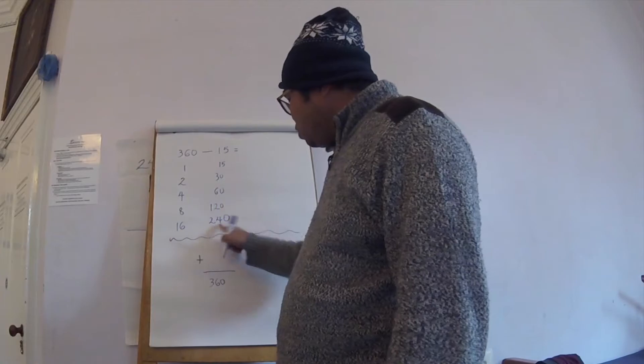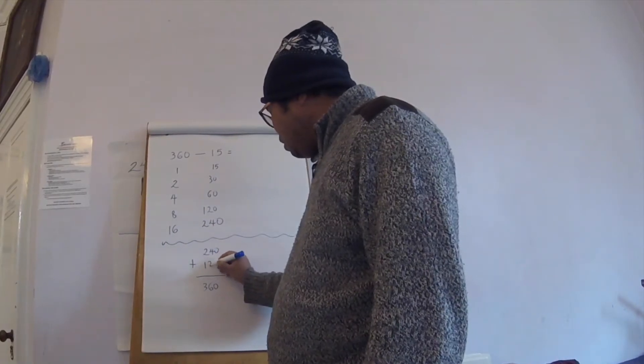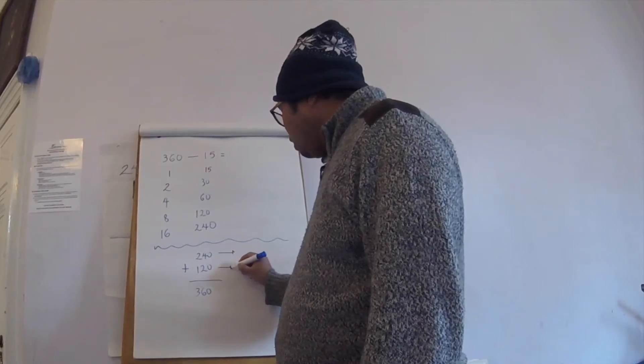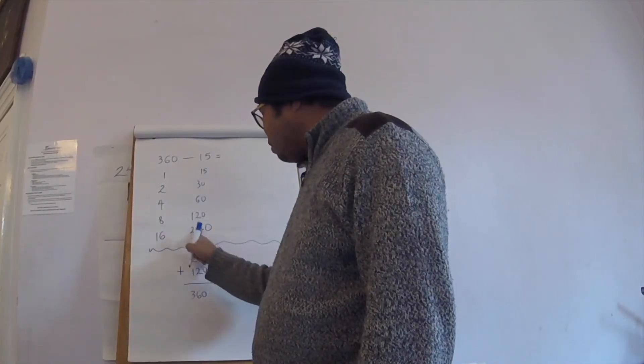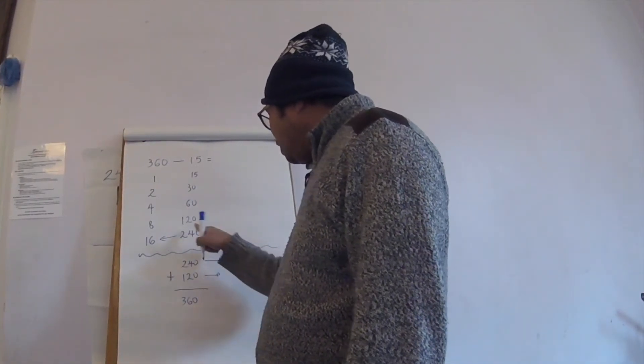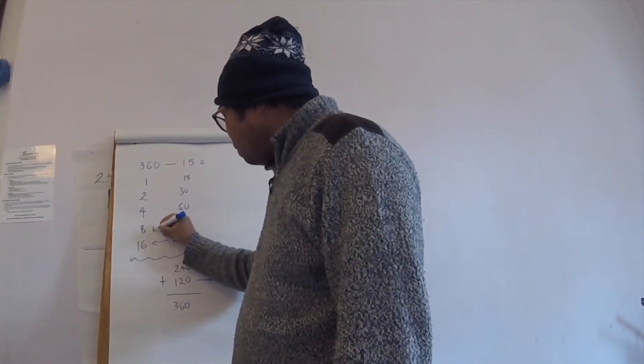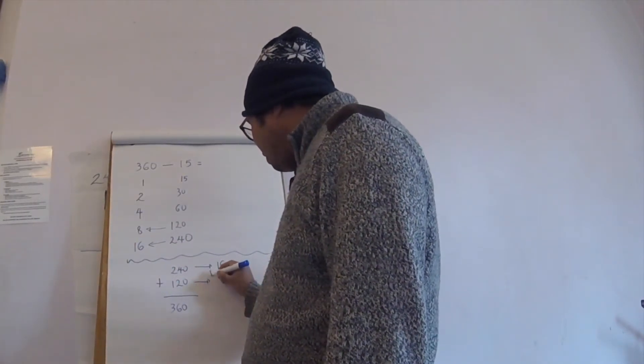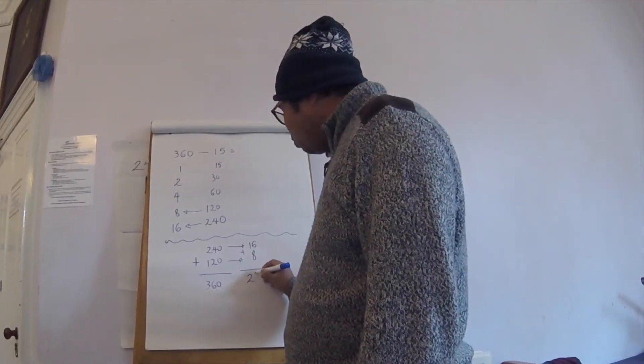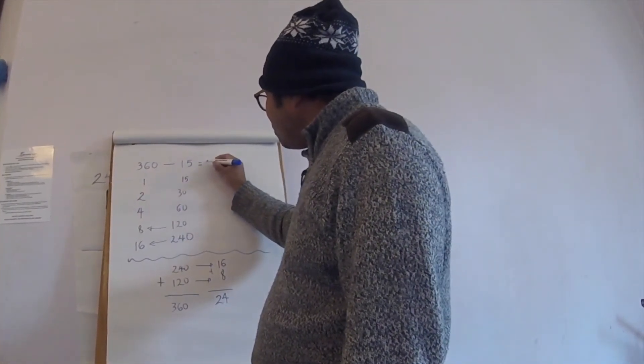Yes, these two numbers: 240 add 120 is 360. Now the next step is what are the numbers next to 240? That's 16. And then this one, what's next to 120? Eight. You add them together: 16 plus 8, what's the answer? 24. And so 360 divided by 15 is 24.